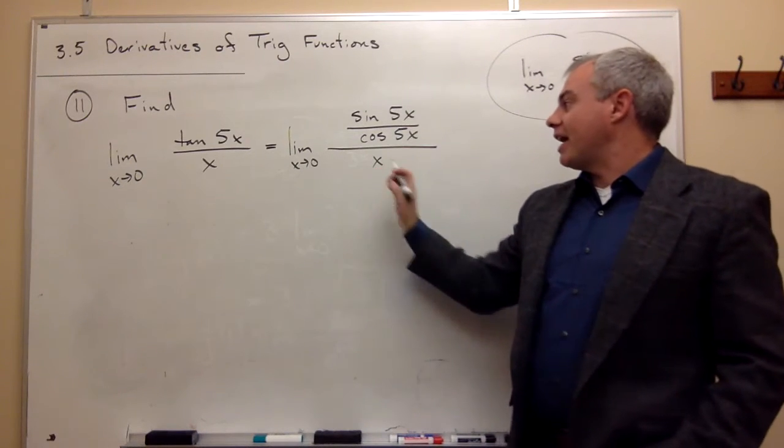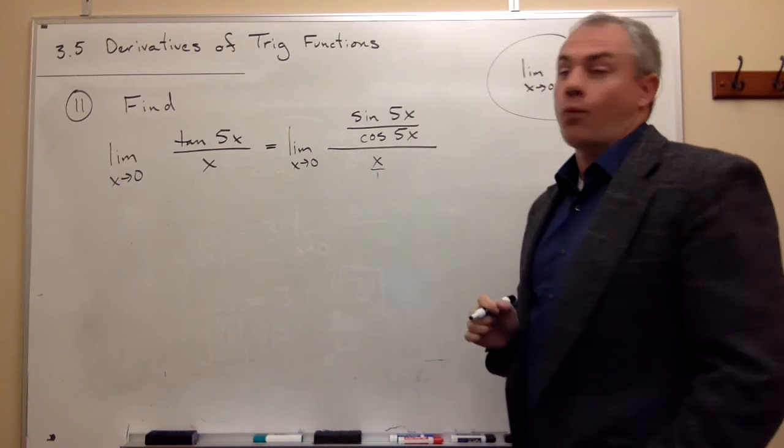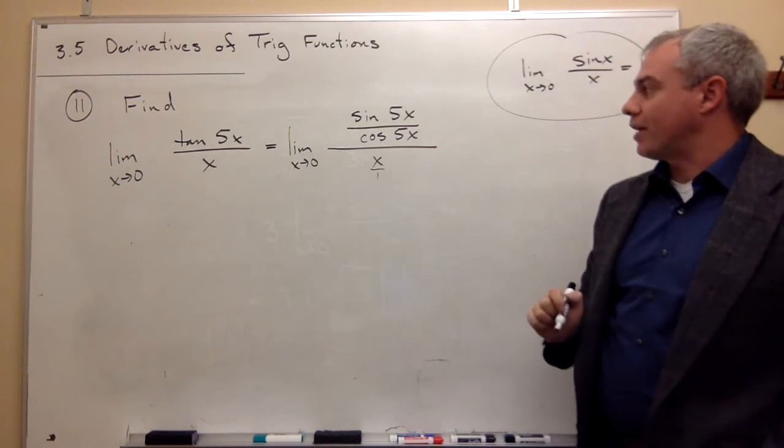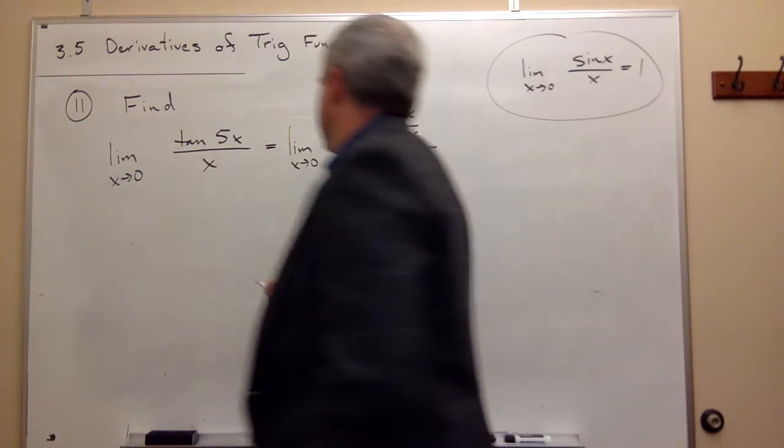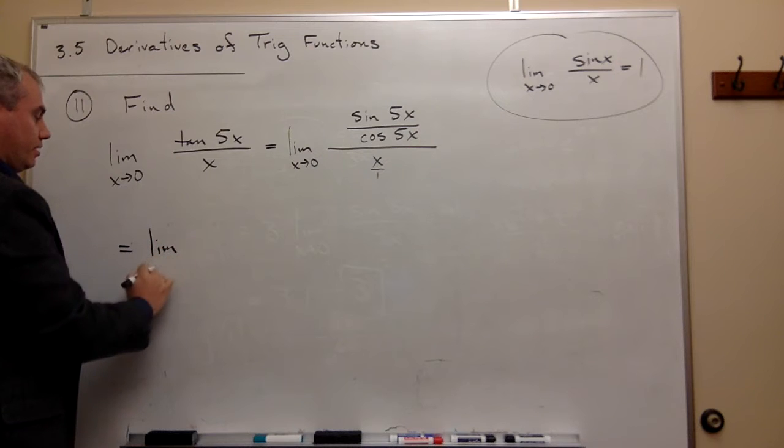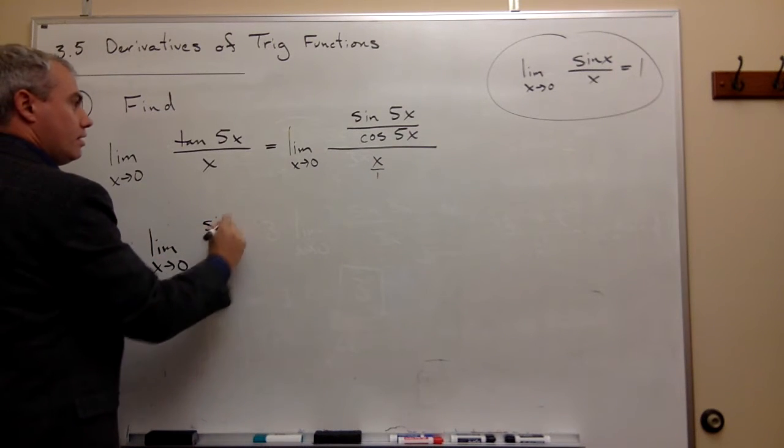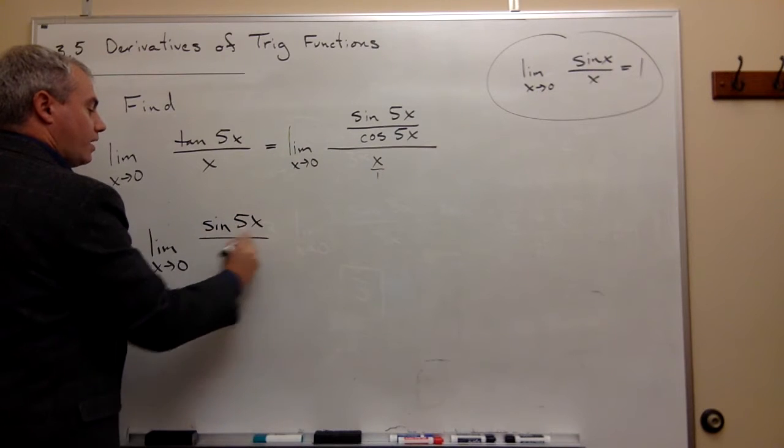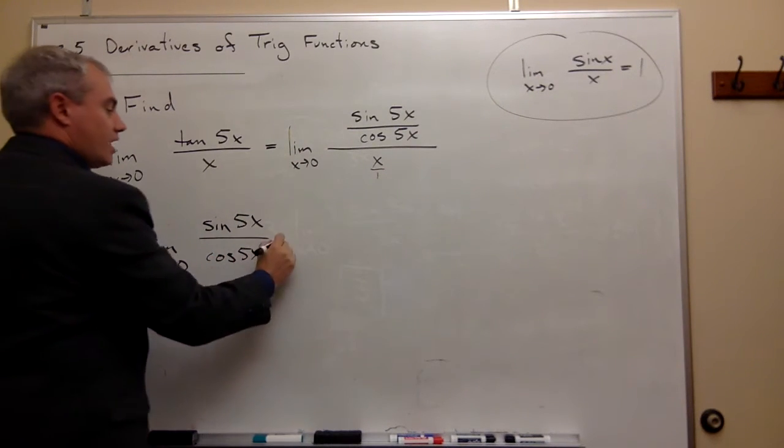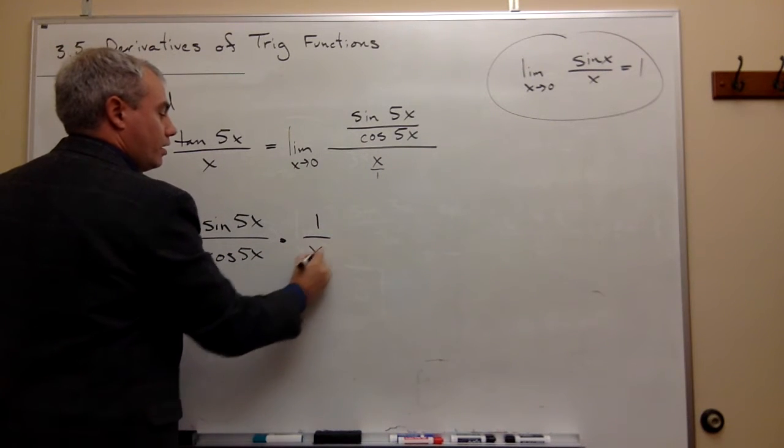Now, if it's divided by x, x is the same thing as x over 1, so I might as well write it that way. So I have a fraction divided by a fraction, so I can flip and multiply. This equals the limit as x goes to 0 of sine of 5x divided by cosine of 5x times, if I flip and multiply this, 1 over x.